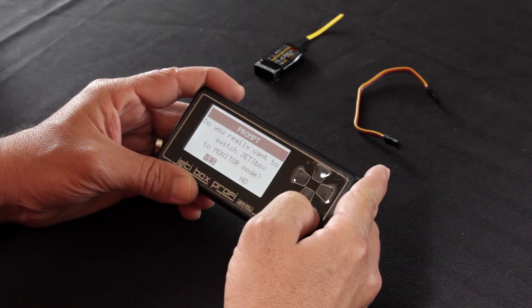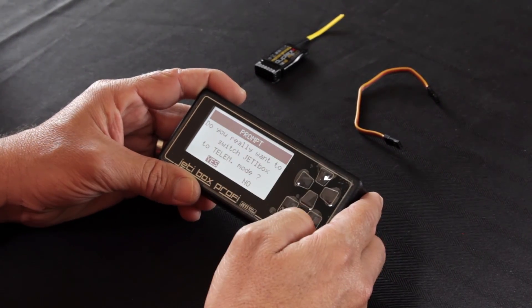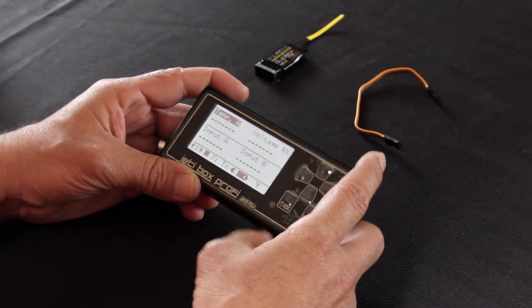If you had received it and it was in monitor mode, you'll just need to switch it. So you'll hit a right arrow, switch to telemetry and hit Yes. So we're going to Escape twice, back to the main menu.